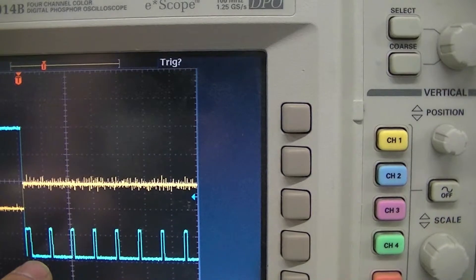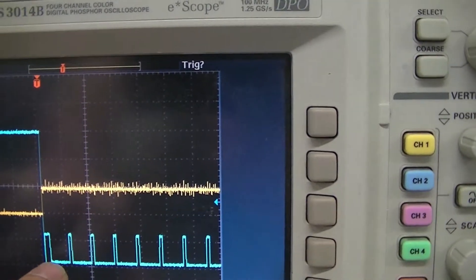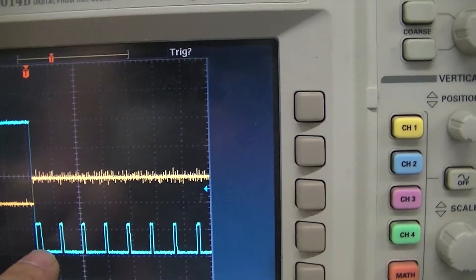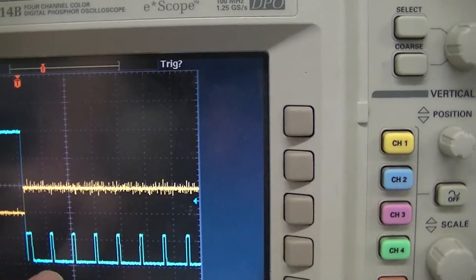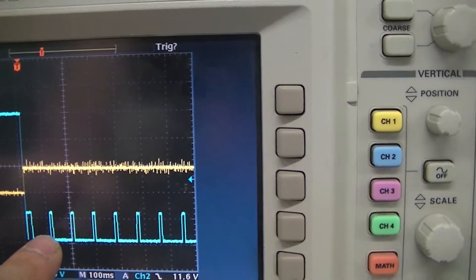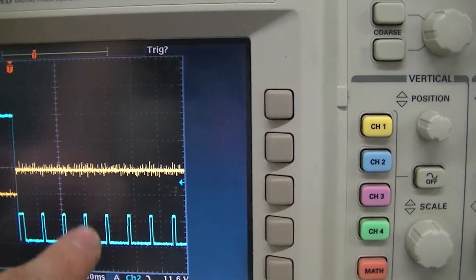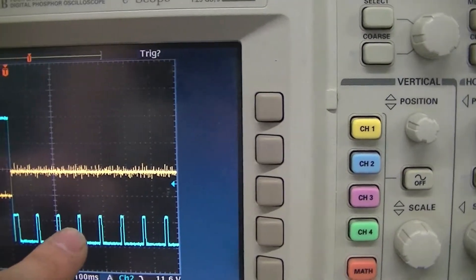We turn the unit into what we call a hiccup mode, where we turn off the output stage for a predetermined set of time and the unit will try to come back on again. If the short circuit is still present, it will back off for the same amount of time and try to restart at regular intervals.